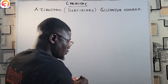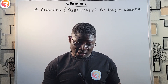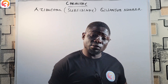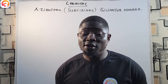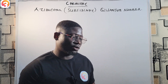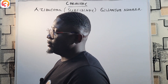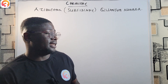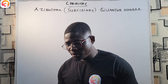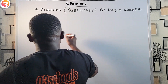Before now we have looked at the quantum numbers. We said there are four quantum numbers that Niels Bohr used to explain the results of his experiment: the principal quantum number, the azimuthal or subsidiary quantum number, the magnetic or third quantum number, and the spin quantum number. The azimuthal or subsidiary quantum number is represented with the letter l.